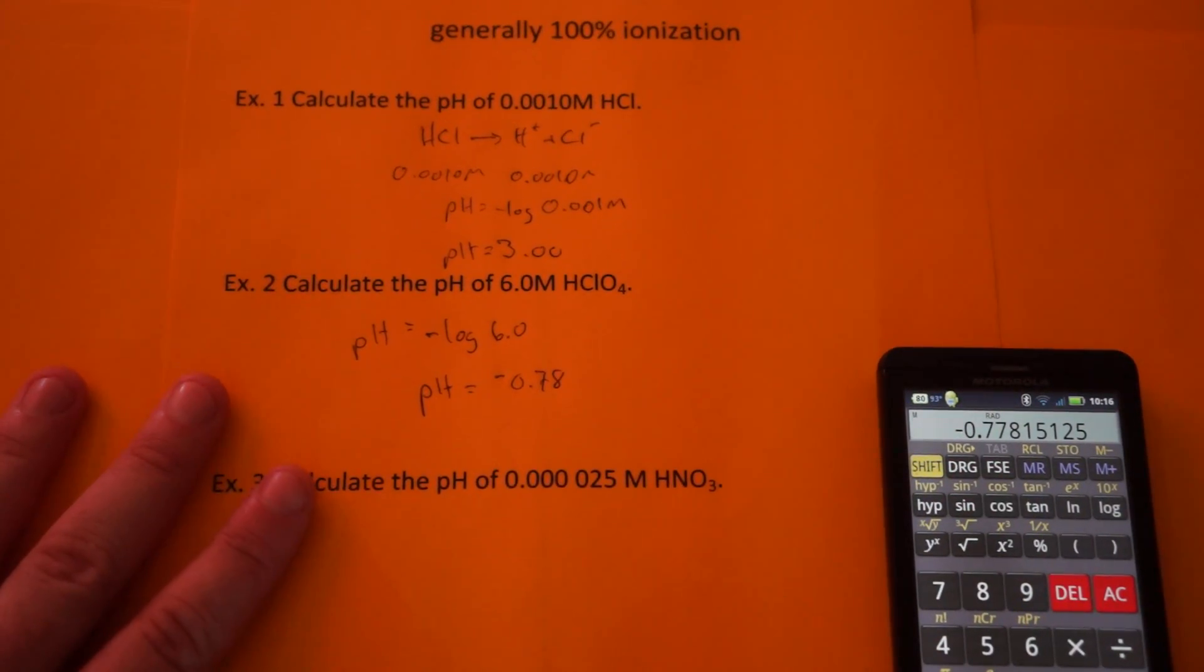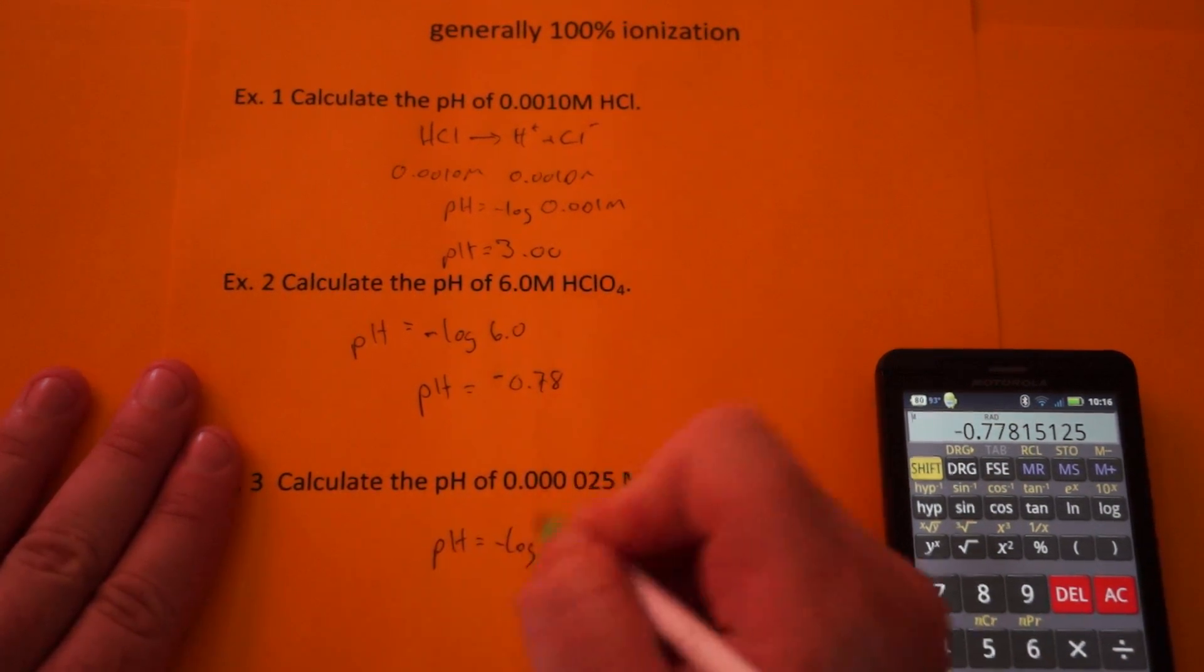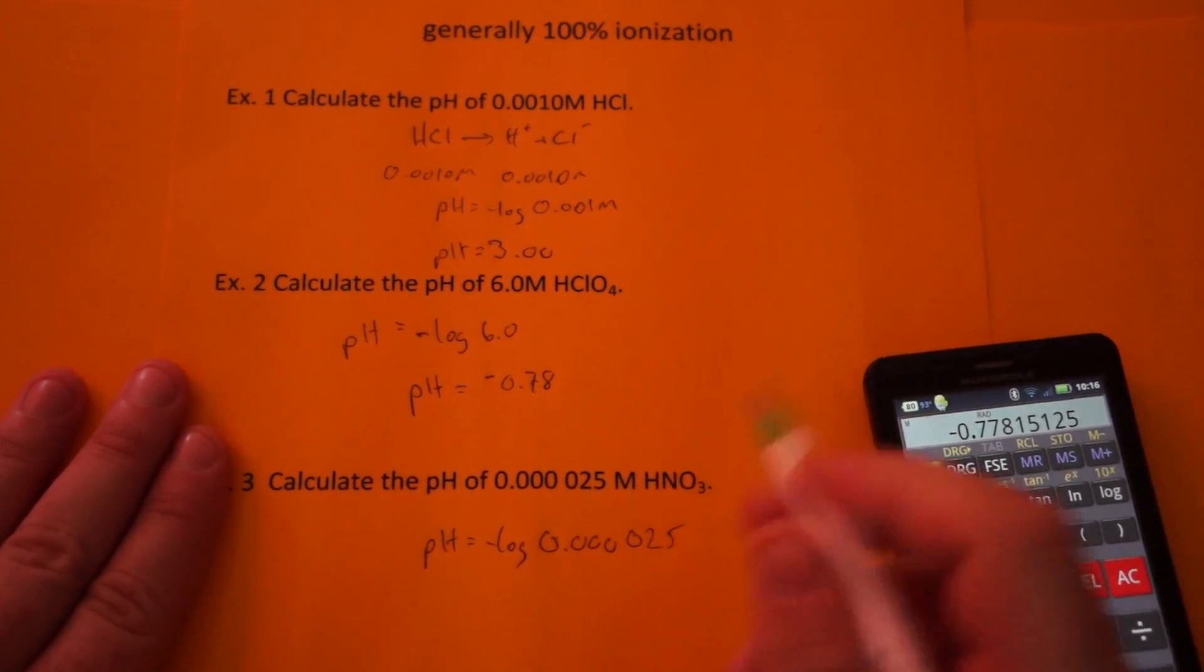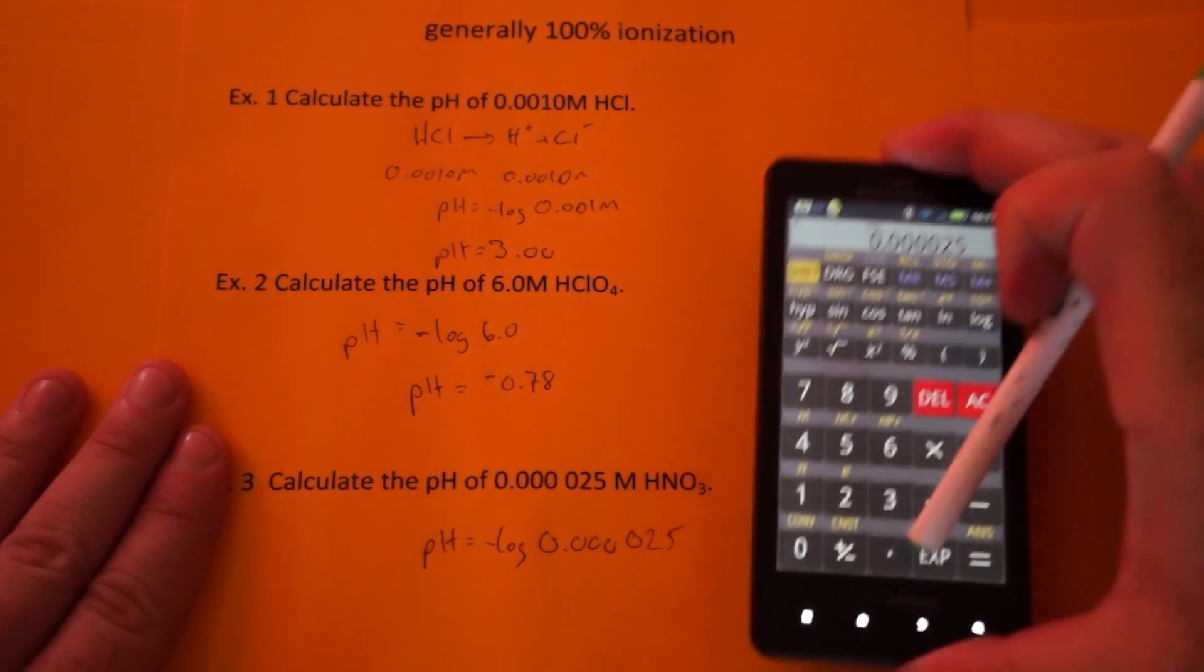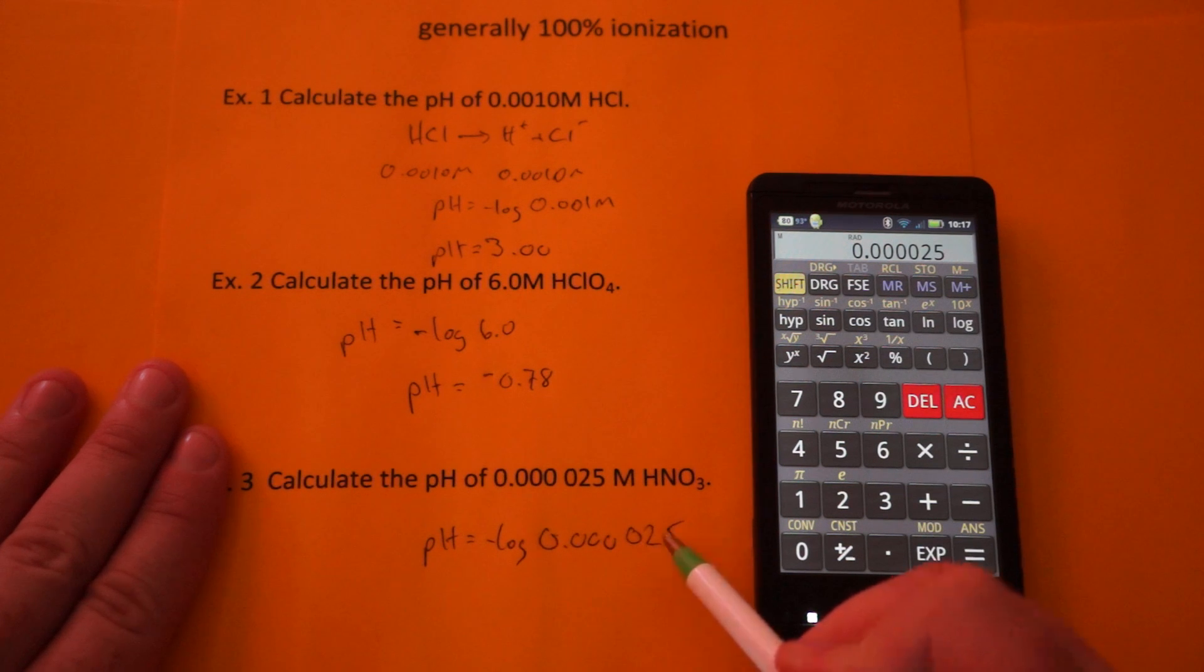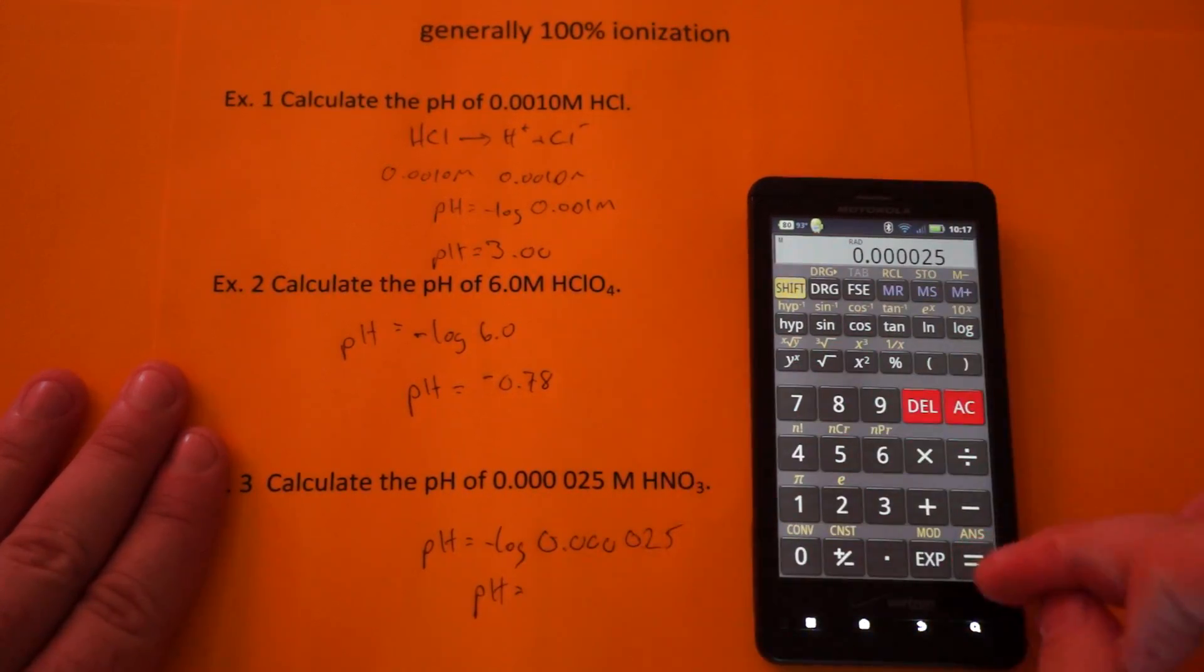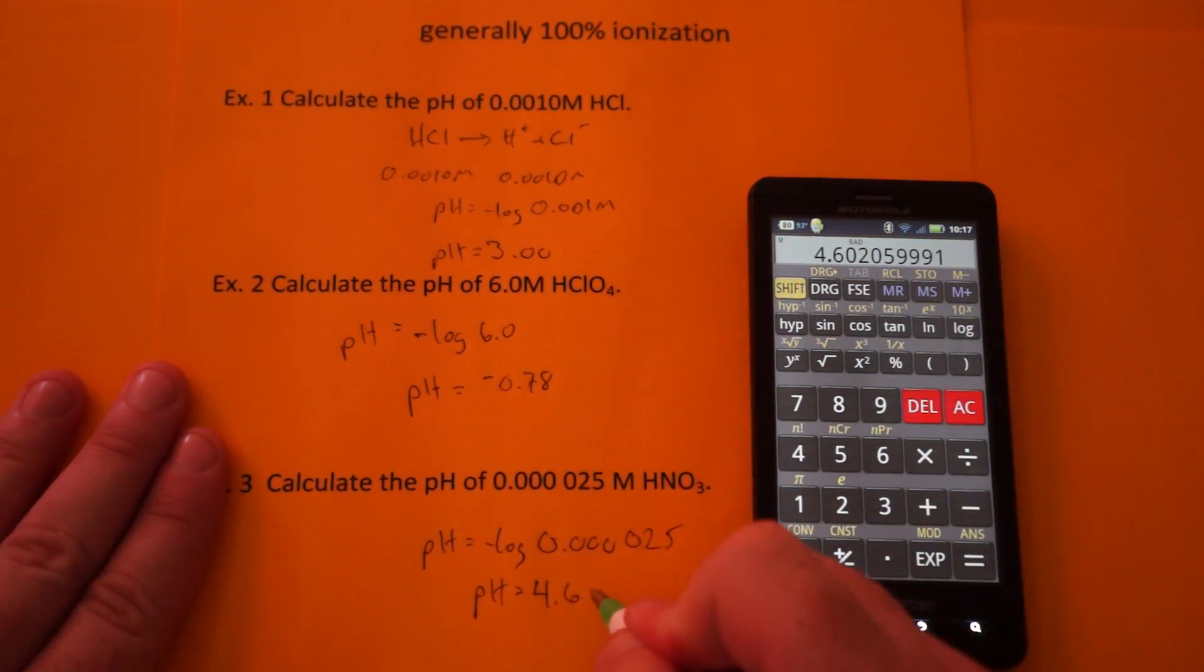Now I'm going to show you how to estimate pH with example number 3. pH equals negative log of 0.00025. Put that in your calculator, and before I hit log, here's a trick. Count how many spaces you move the decimal - you hit the first number: 1, 2, 3, 4, and then to get to scientific notation would be the 5th. So the pH is between 4 and 5 because that's where the 2 is. When I hit log, you're going to get 4.60.